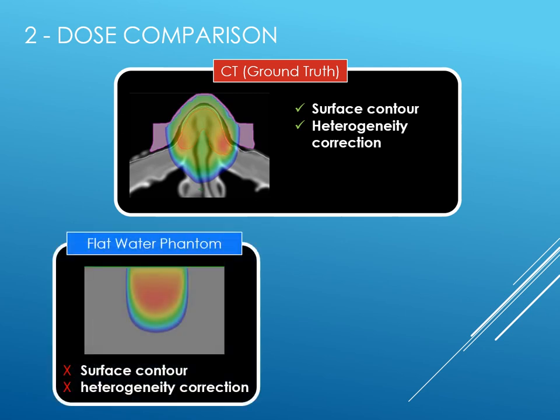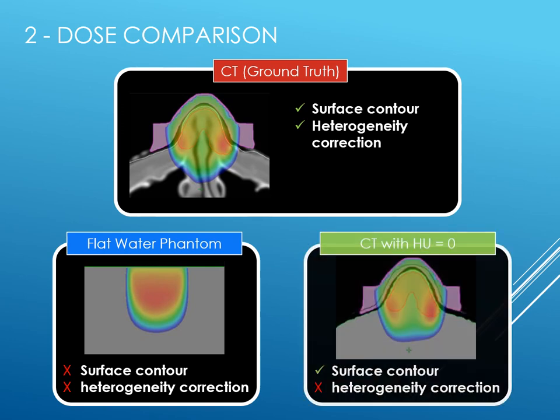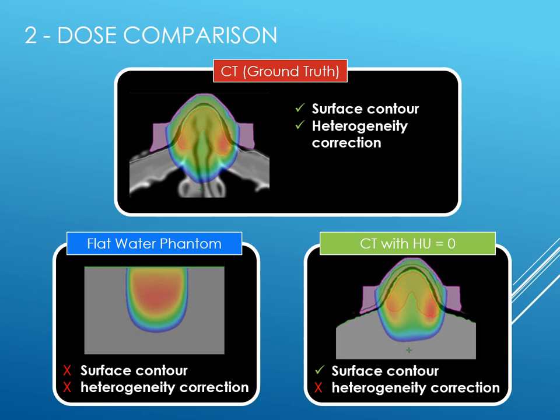Second, a flat water phantom representing a traditional clinical calculation which lacks both surface and heterogeneity information. And finally, third, a CT scan with the Hounsfield unit inside the body set to zero to represent the output of our camera, which does account for surface variation but not heterogeneities.